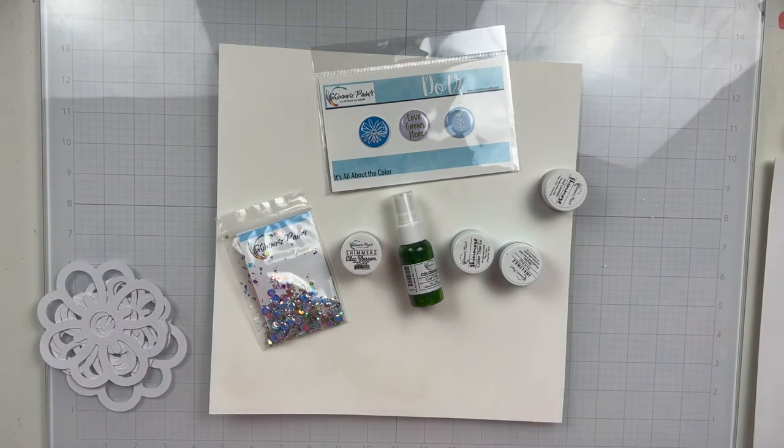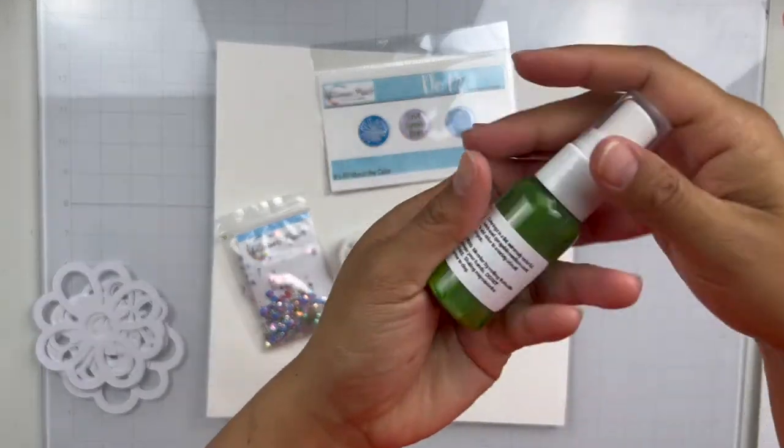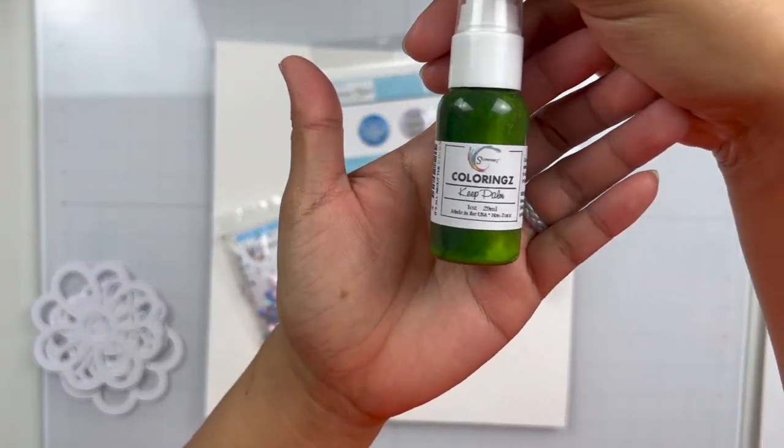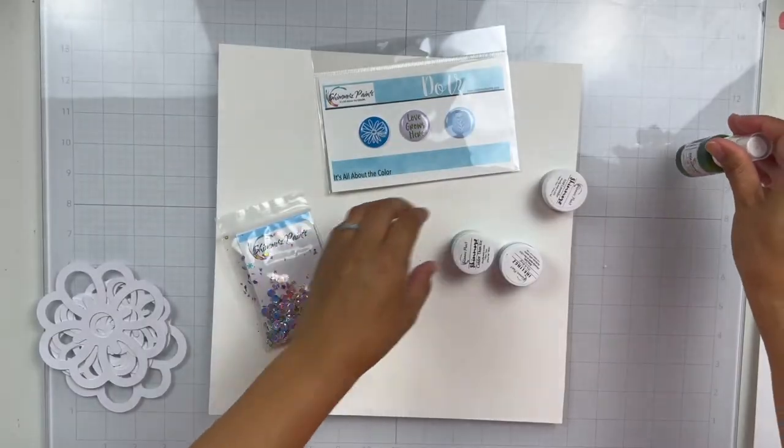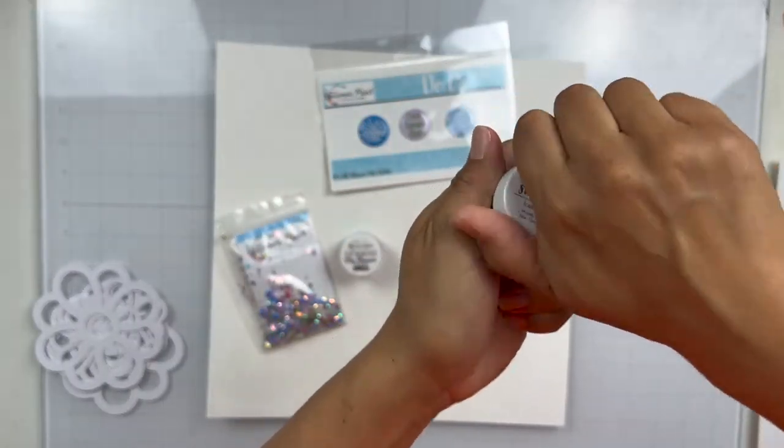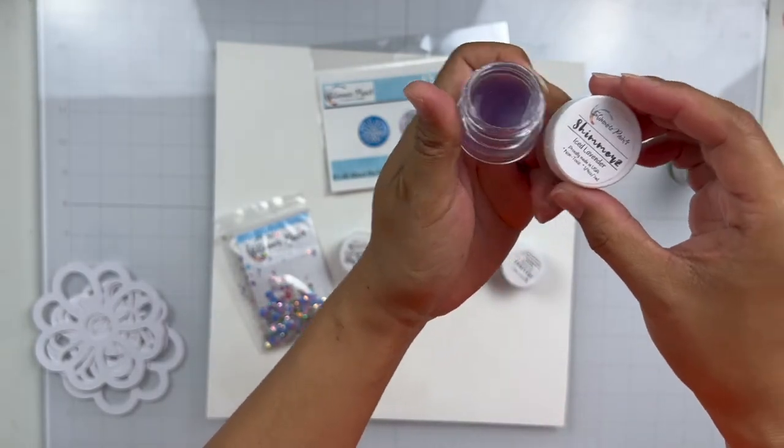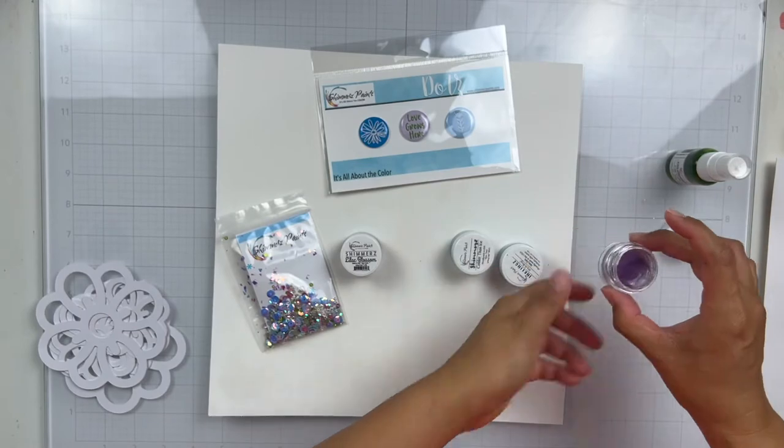So the first color that we get is a Keep Palm Colorings and it's this really pretty green. And then we do get some paint pots. So this is a Shimmers and this one I believe is called Iced Lavender. Yes, that one is Iced Lavender.